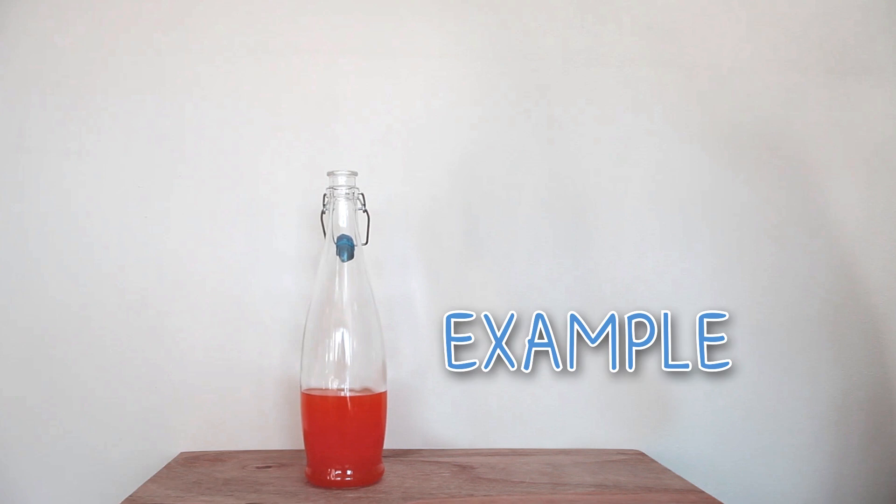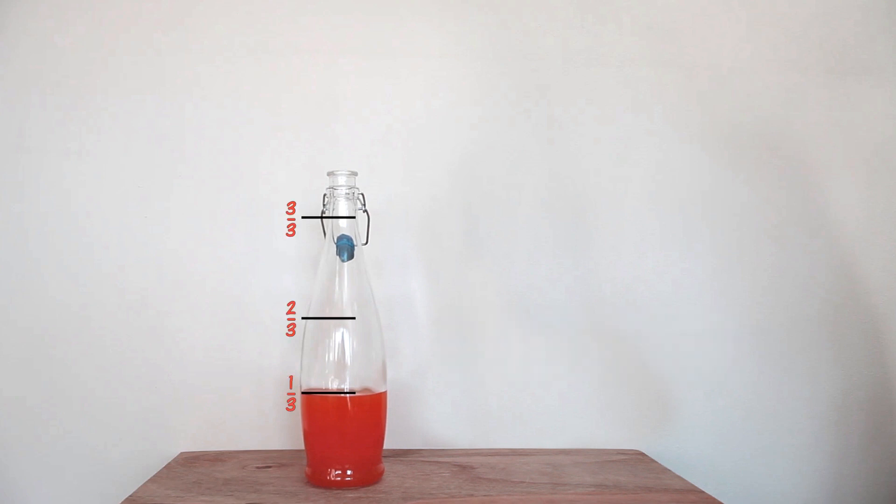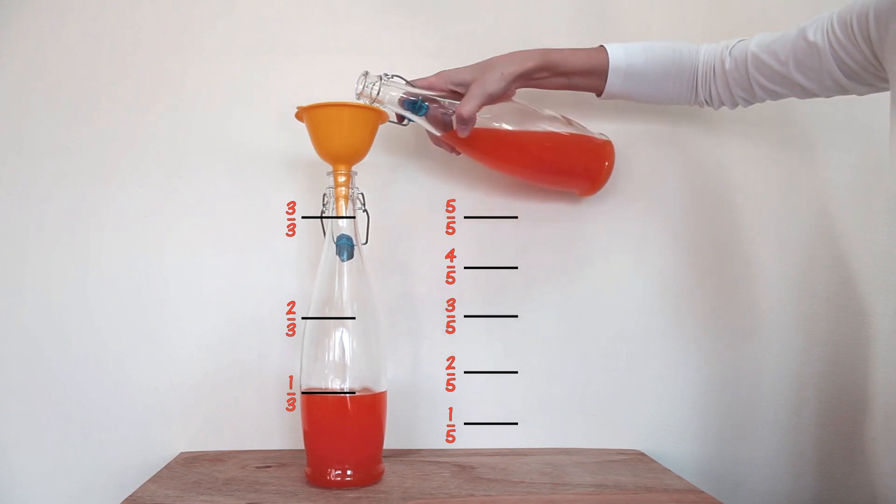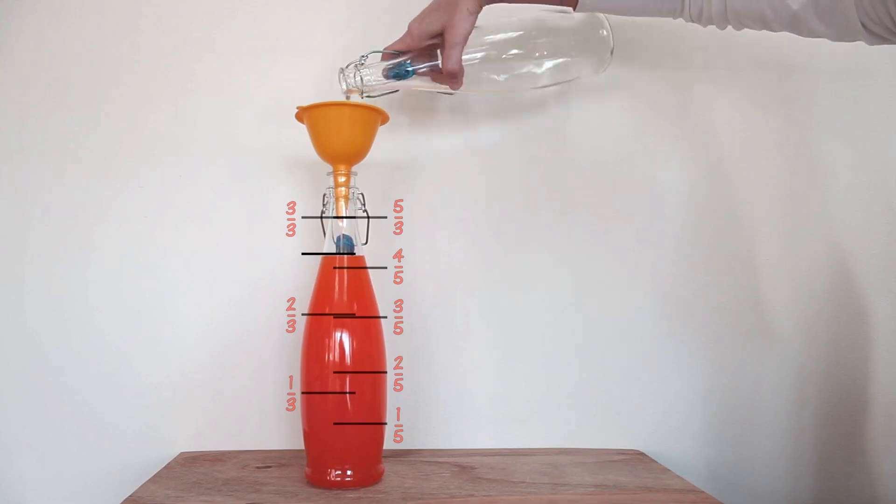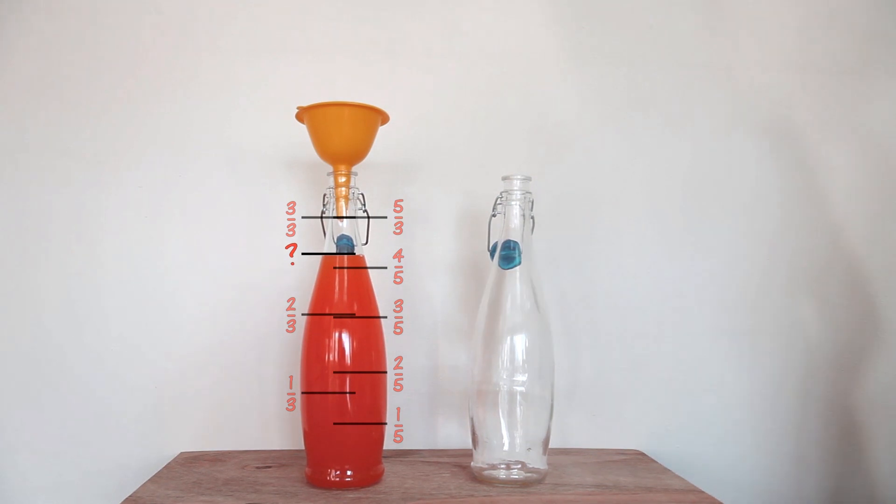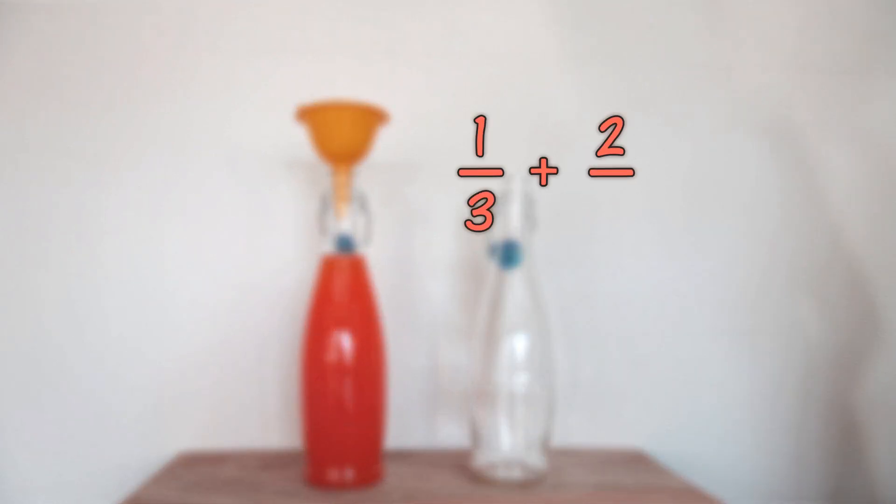You have a bottle of juice which is one-third full. Your friend has the same size bottle, and his is two-fifths full. You add the two drinks together. How full is your bottle? The equation would be one-third plus two-fifths.